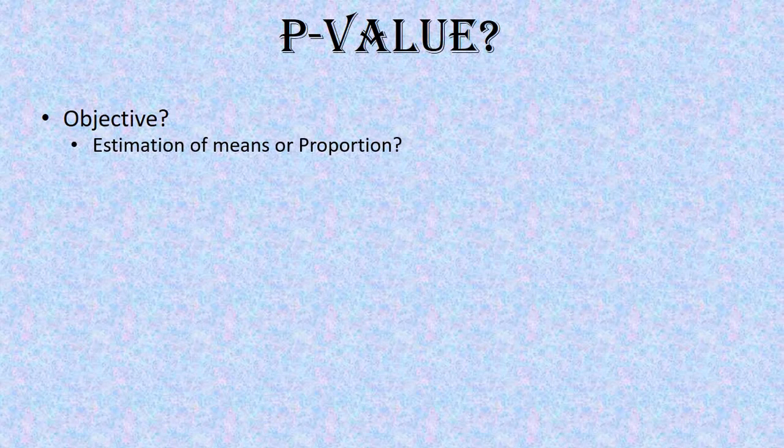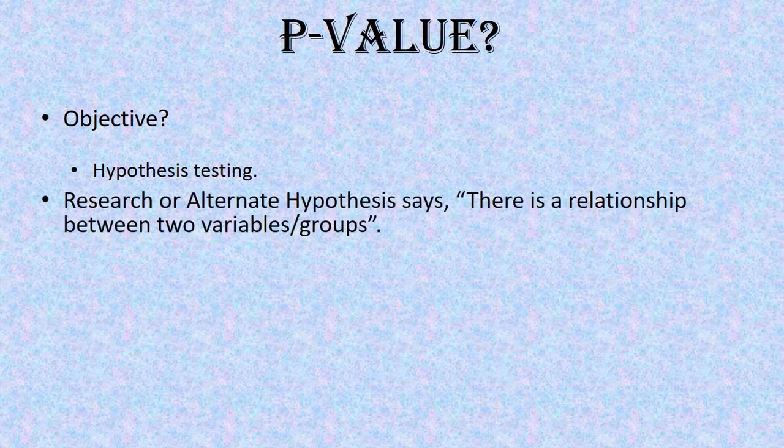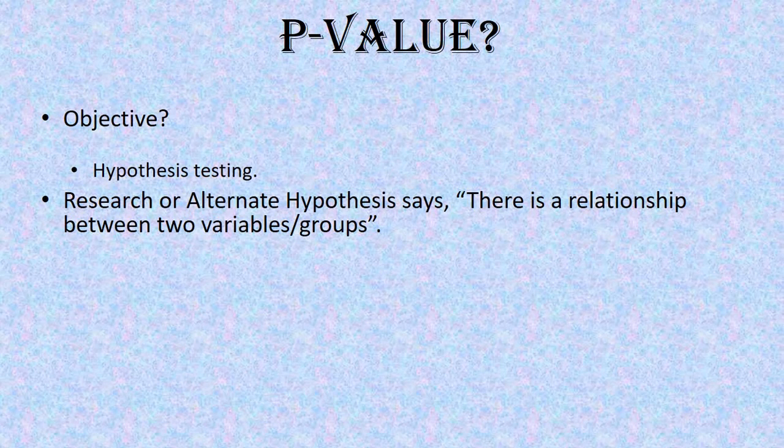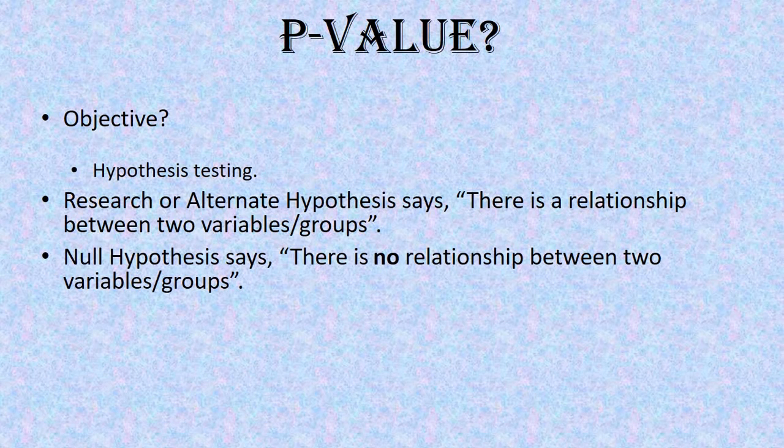If you are studying relationship between two variables or comparing two groups, then you postulate and test a hypothesis. In any research, we have two hypotheses: one is research hypothesis and null hypothesis. Research hypothesis or alternate hypothesis says there is a relationship between two variables or two groups, whereas null hypothesis says there is no relationship or null relationship between two variables or two groups.